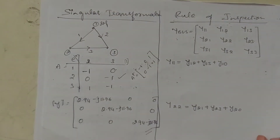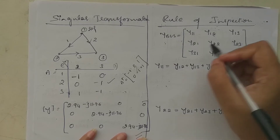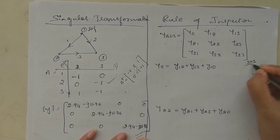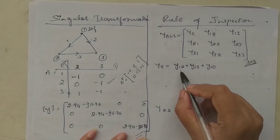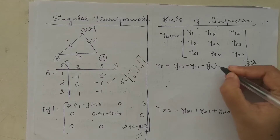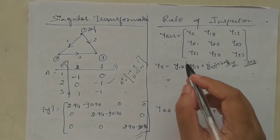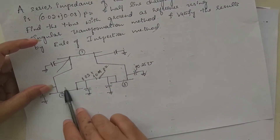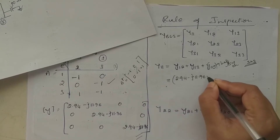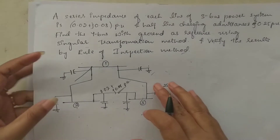Now for the rule of inspection method: Y_bus is formed as a 3×3 matrix with elements Y11, Y12, Y13, Y21, Y22, Y23, Y31, Y32, Y33. For this problem, Y11 equals Y12 + Y13 + Y10, where Y10 is the half-line charging admittance. Y12, which is the reciprocal of Z12, equals 2.94 - j11.76, and again Y13 = 2.94 - j11.76.